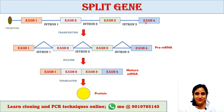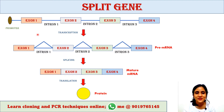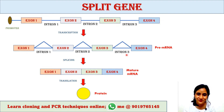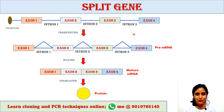This is the DNA — it contains four exons and three introns. Specifically, this gene contains four exons and three introns. Here is the promoter. Transcription is taking place, producing pre-mRNA, where both exons and introns are present.